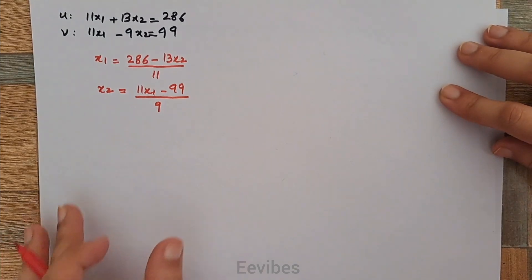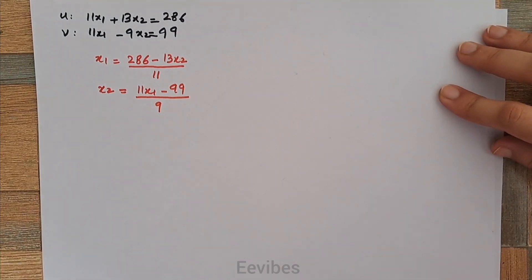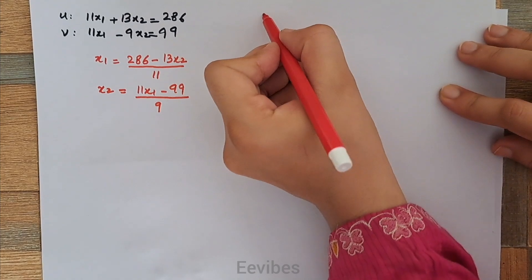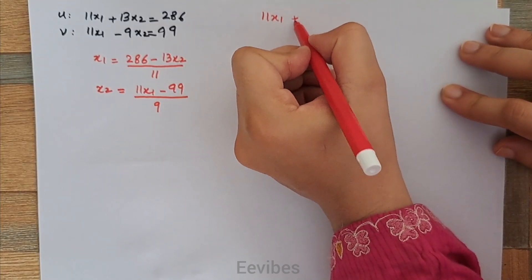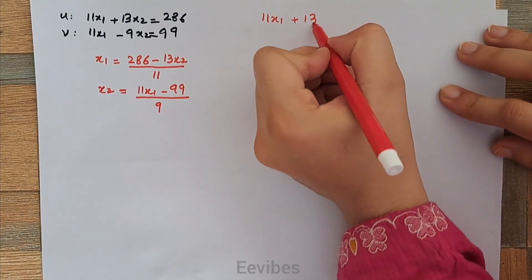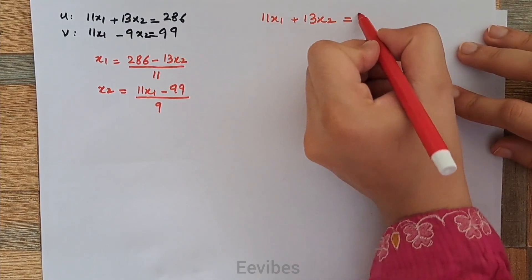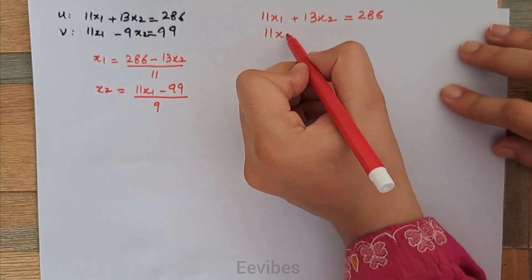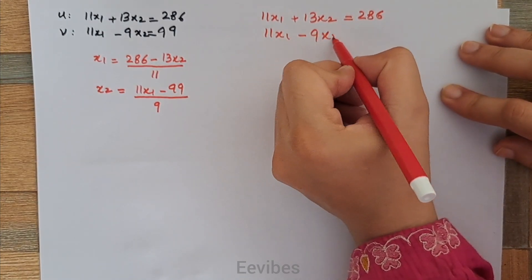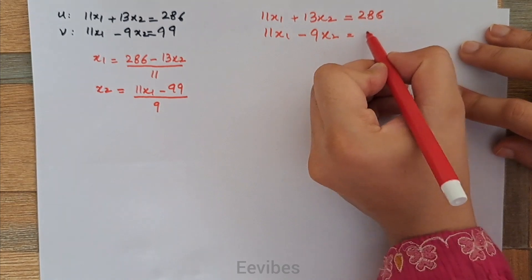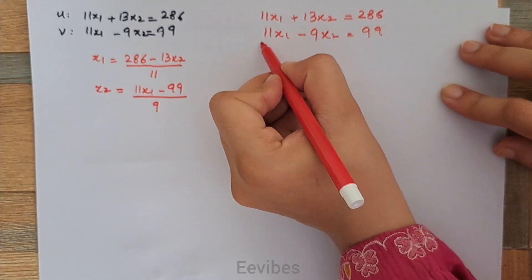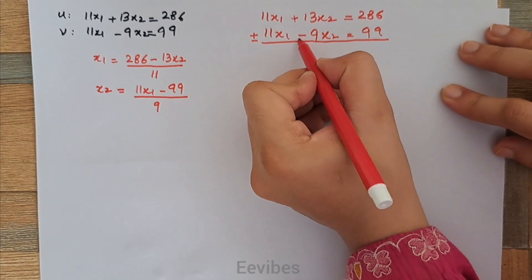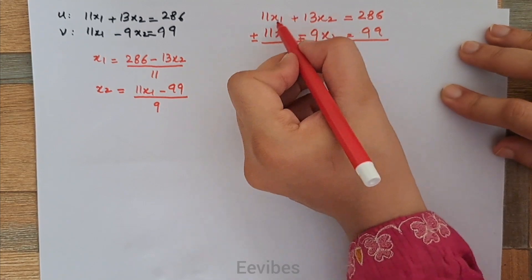Before applying the iterative method, let's solve the system of linear equations directly. Since we have only two equations and two variables, we can find the direct solution. The purpose of finding the direct solution is to verify the iterative results later.